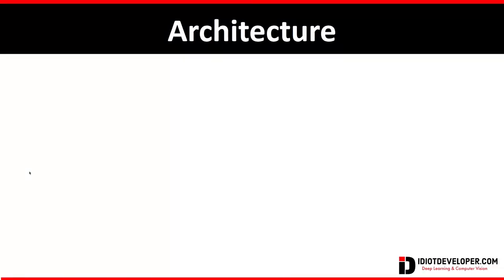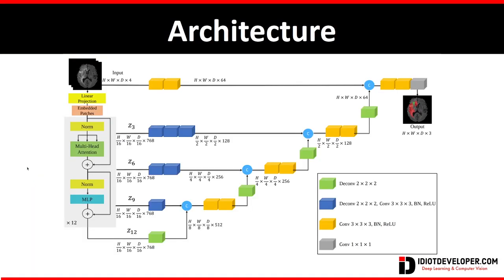Now let's take a simple look at its architecture. I already have a video on the implementation of UNETR in both TensorFlow and PyTorch. For a more detailed discussion you can watch that video. Here you can see a simple overview of this architecture, and in this video we are working on 2D image segmentation, so everything would be from the point of view of 2D image segmentation.